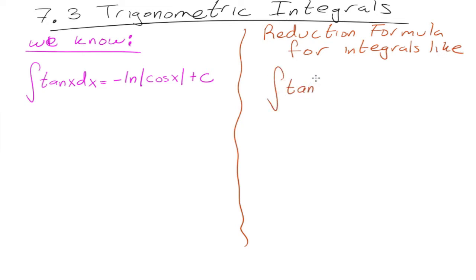We'll start off with tangent because that's the easiest one. We know how to integrate tangent, but can we integrate tangent squared, tangent cubed, tangent to the fourth, or tangent to the fifth? What we're going to do is derive a formula so that we can reduce the degree of tangent, make it lower, and then integrate that way. If you have tangent to the tenth, you would be able to find what that is.